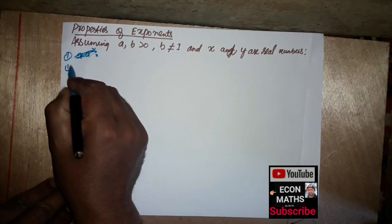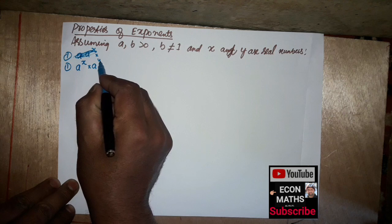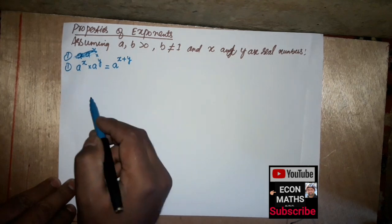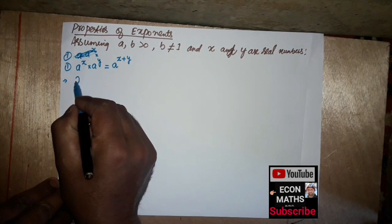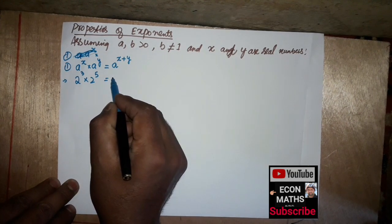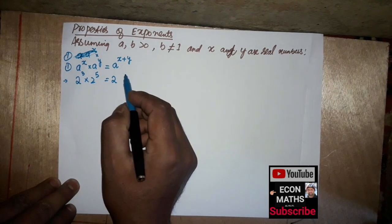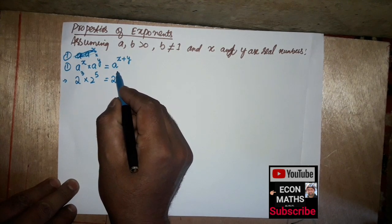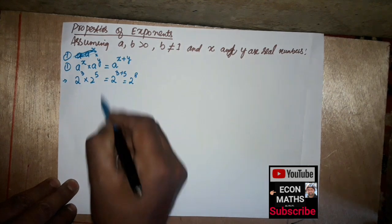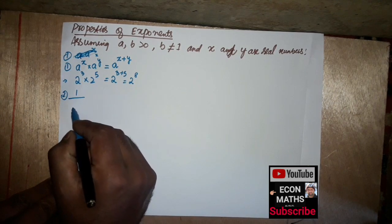The first property is: a to the power x times a to the power y is equal to a to the power x plus y. For example, 2 to the power 3 times 2 to the power 5 — since the bases are the same — becomes 2 to the power 3 plus 5, which equals 2 to the power 8.